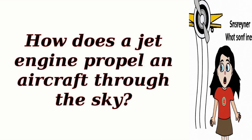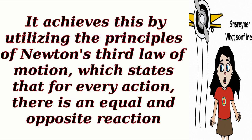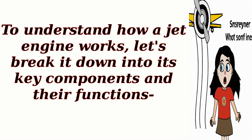How does a jet engine propel an aircraft through the sky? A jet engine is a complex piece of machinery that propels an aircraft through the sky by generating thrust. It achieves this by utilizing the principles of Newton's third law of motion, which states that for every action, there is an equal and opposite reaction. To understand how a jet engine works, let's break it down into its key components and their functions.